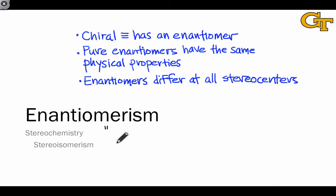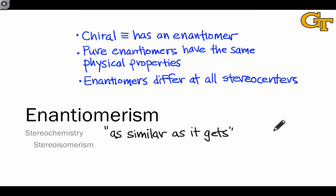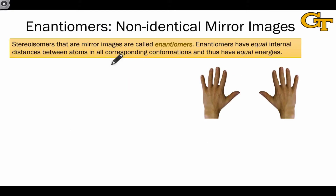The thing that makes enantiomers fascinating is that on the molecular level, this is as similar as two molecules can get without being identical. They have the same molecular formula, same connectivity, and same internal distances between atoms. They only differ because they're mirror images — that is as similar as two molecules can possibly get without being the same thing. Enantiomers are stereoisomers that are mirror images of each other.